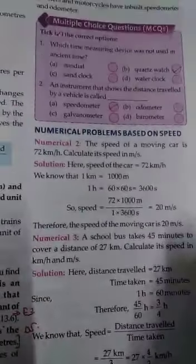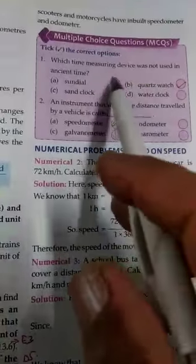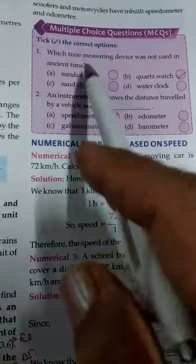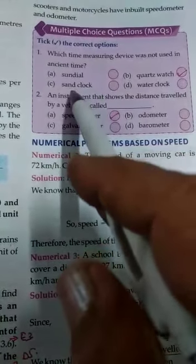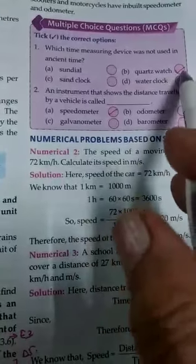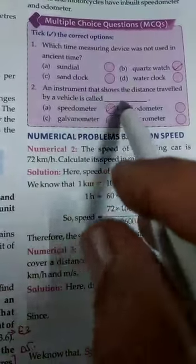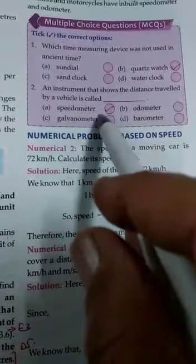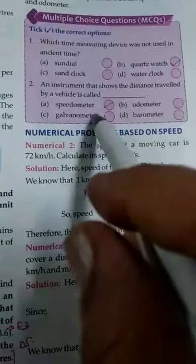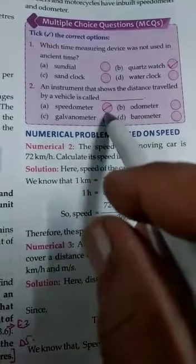Yahan pe kuch numericals ya questions hain. Which time measuring device was not used in ancient times? Sun dial bhi use hota tha, ancient time mein sand clock bhi, water clock bhi. Quartz watch jo hai, woh aapki ancient time mein use nahi hoti thi. An instrument that shows the distance travelled by a vehicle is called - jo aapka distance travel hota hai, usko speedometer se show hota hai.